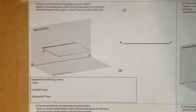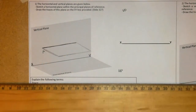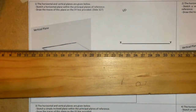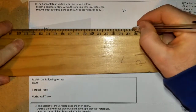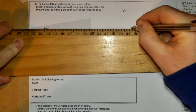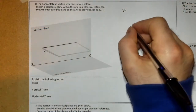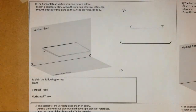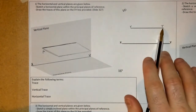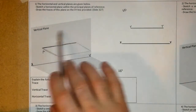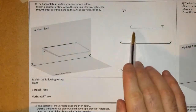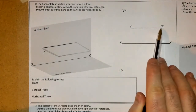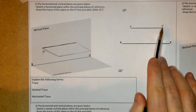How that would appear on your page is just a line above the XY line, like that. That would be known as a vertical trace, or VT, because it's on the vertical plane. That is the trace of a plane that intersects the vertical plane.